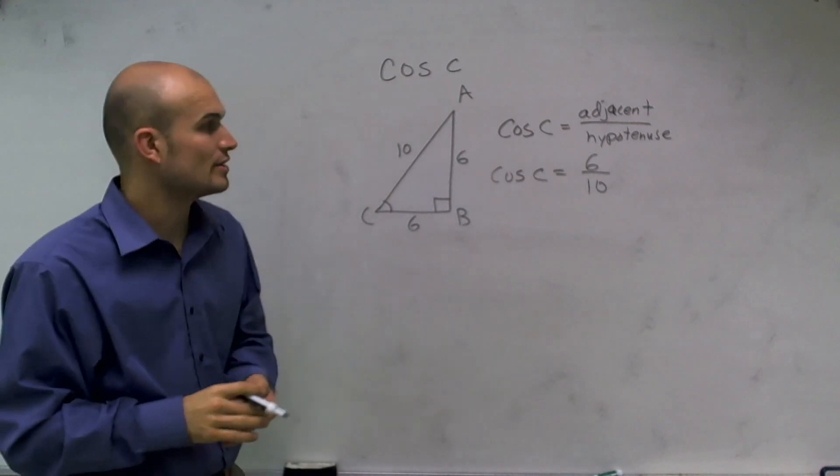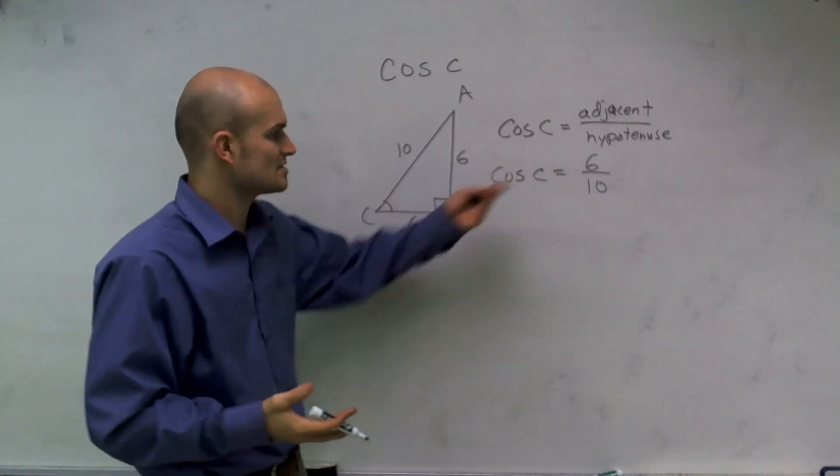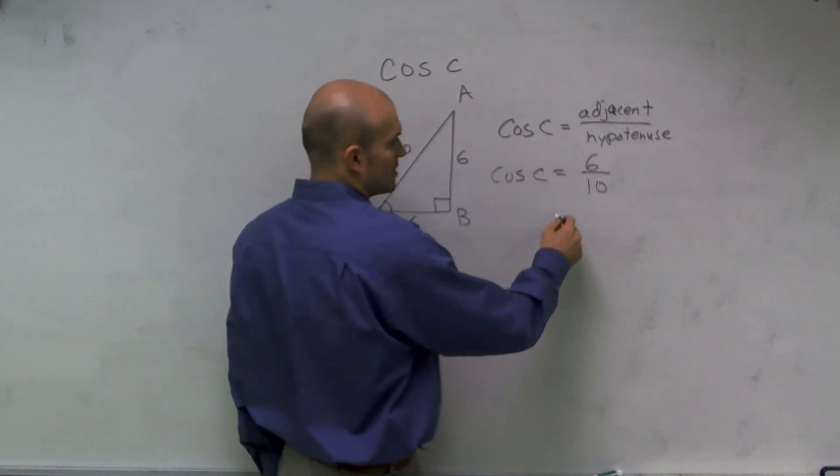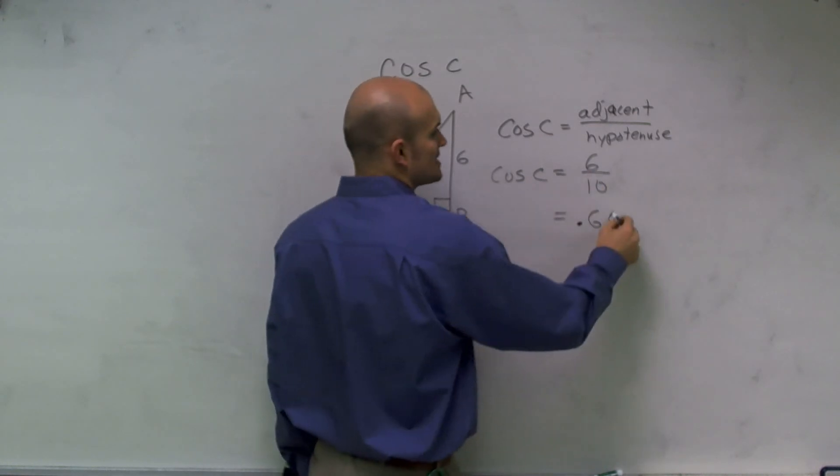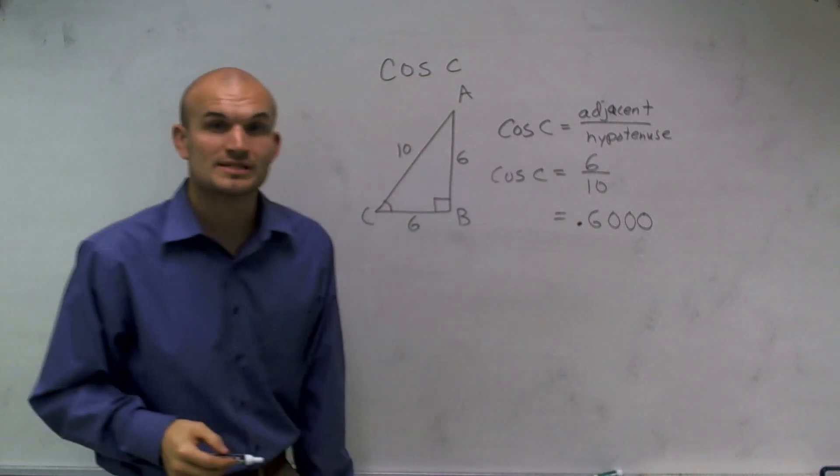Now the question asks you to go ahead and reduce this down to the nearest thousand. So here I have it as a fraction. So I'm just going to make sure I reduce this down to 0.6 and then to the nearest thousand, I'll add three zeros.